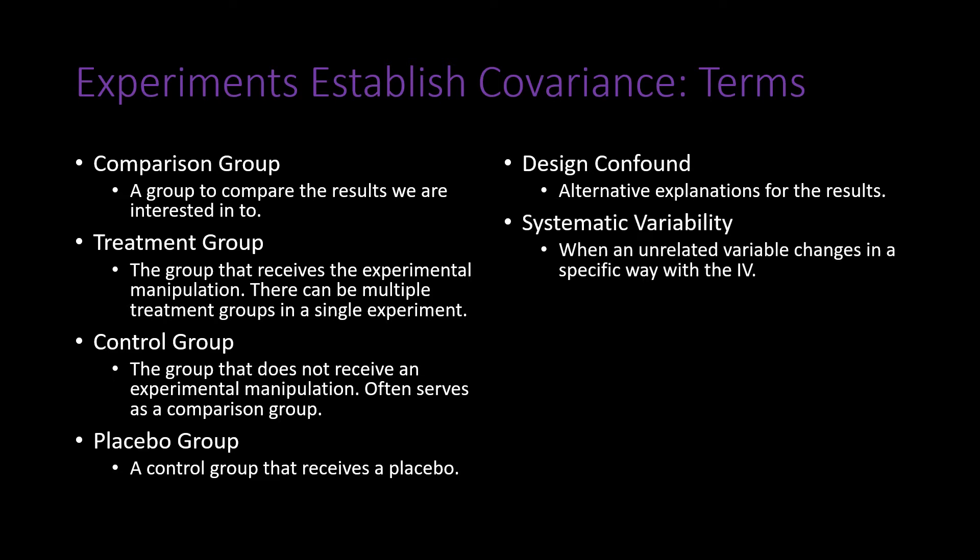Systematic variability refers to variability that changes along with the independent variable, where some other variable is changing systematically with it — and this other variable might actually be causing the observed differences on the dependent variable. It is very difficult to know when systematic variability is present, because both variables change together, making it hard to know which one is the true cause.